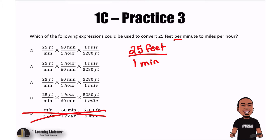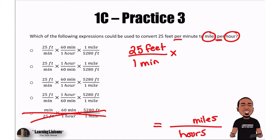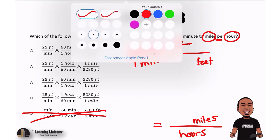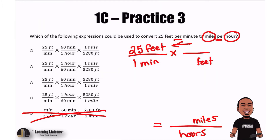Think about it this way — we're trying to convert, so the way we want to multiply is to make sure that our units cancel to get the new unit. If I want to end up with miles over hours, and feet is currently on top, I need to multiply by a fraction with feet in the denominator so the units cancel out.